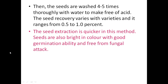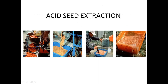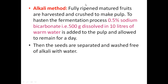The acid extraction method: fruit pulp is prepared, acid is added at 25 ml per kg of pulp, kept for 30 minutes with proper stirring, then seeds are washed. Next is the alkali method: 0.5 percent sodium bicarbonate — that is 500 grams dissolved in 10 liters of water — is added. It is left for a day, then seeds are separated by washing. The acid method takes only 30 minutes, but the alkali method takes a full day. The alkali method is less harmful but very time-consuming.